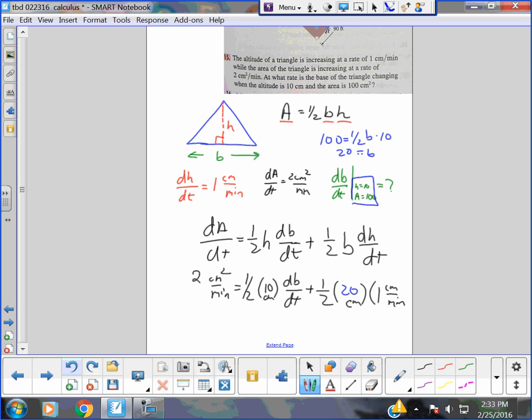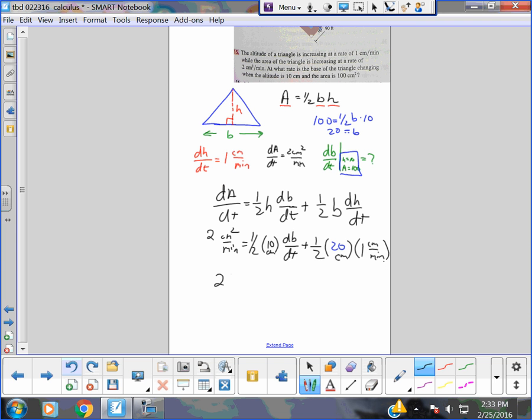Alright? Now it's just a whole bunch of math. Let's see. I get 2 centimeters squared per minute equals 5 centimeters db/dt plus half of 20 is 10 - 10 centimeters squared per minute.